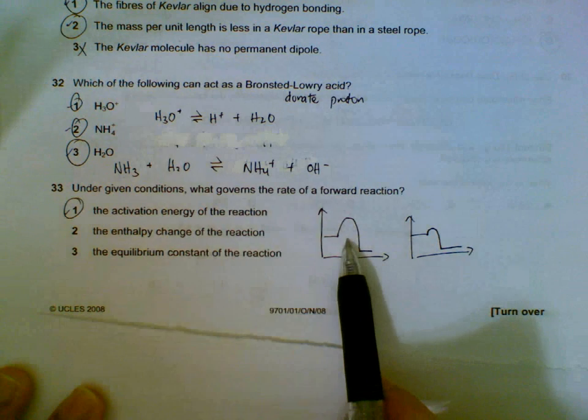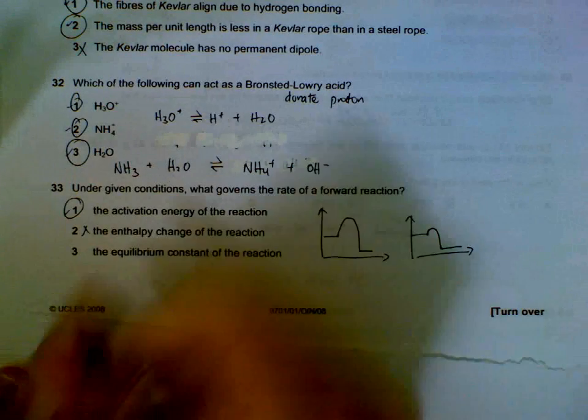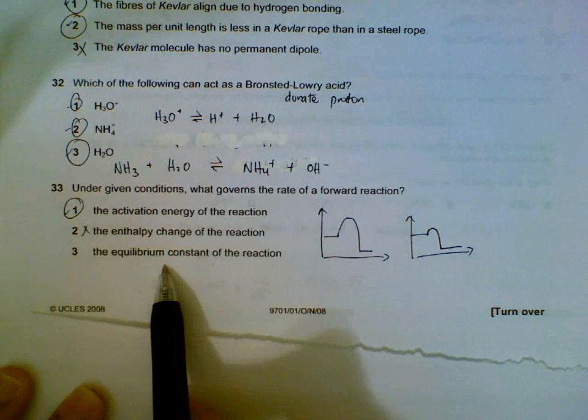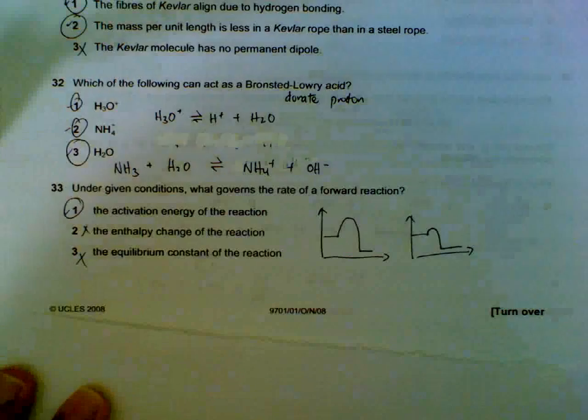Compare these two—they have the same enthalpy change, but what affects the speed, how fast this one goes to the other side, is the activation energy it has to overcome, not the enthalpy change. Equilibrium constant is simply a reflection of the ratio of the products and reactants during equilibrium, so it doesn't affect the forward reaction rate.